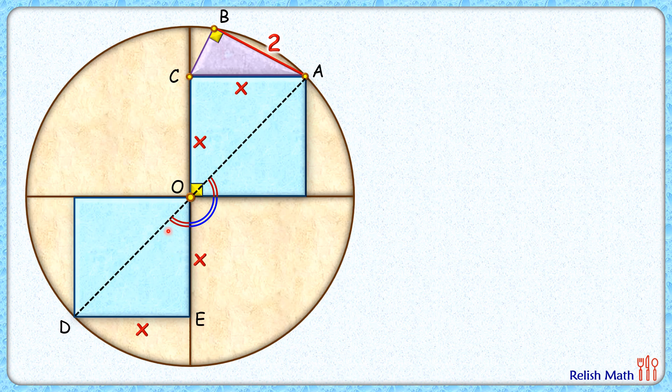This complete angle is 180°, so we can say DA is a straight line passing through the center, and thus DA is the diameter of the circle.